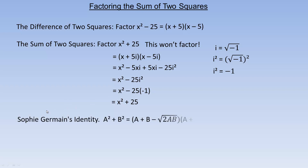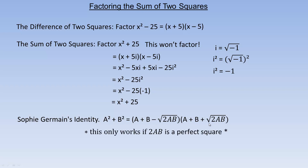So I'm going to introduce something called Sophie Germain's Identity. Sophie Germain was a mathematician in the early 1800s, and this identity is attributed to her. a squared plus b squared factors into a plus b minus the square root of 2ab, times a plus b plus the square root of 2ab. This only works if 2ab is a perfect square, so that when you take the square root of it, you get an integer value.